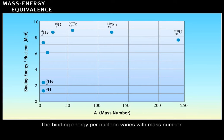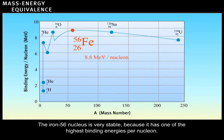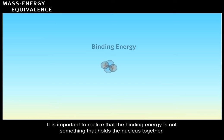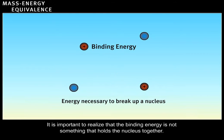The binding energy per nucleon varies with mass number. The iron 56 nucleus is very stable because it has one of the highest binding energies per nucleon. It is important to realize that the binding energy is not something that holds the nucleus together.